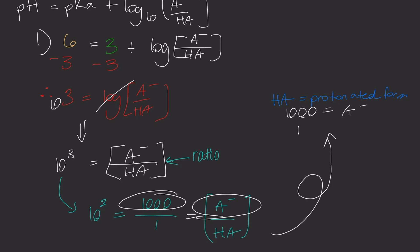But we're looking for HA, which is that of 1. So, you know that 1 over 1,000 or 0.1% is protonated.